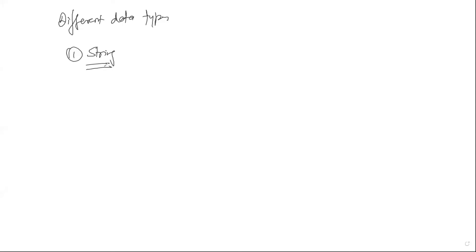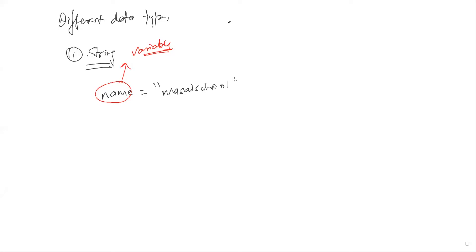First, let's look at strings. A string is a series of letters, numbers, or symbols connected in an order. String can be defined in different ways — you can put it in double quotes or single quotes. So 'name' is a variable which means it is a space allocated to you in memory storage of your computer, in which you have stored a value, and the value is of string data type. The value is 'Masai School'. Since it's a string, we put it under quotes.